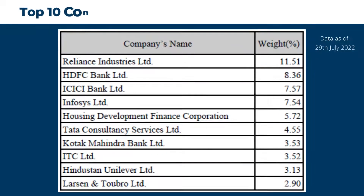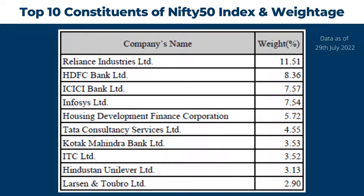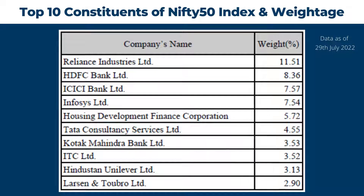On the screen, you can see the top 10 constituents of Nifty 50 and their weight in the index. Please note that this data is as of 29 July 2022 and is sourced from the Nifty 50 monthly fact sheet. As you can see, Reliance has the highest weightage of 11.51%, followed by HDFC Bank and ICICI Bank having weights of 8.36% and 7.57% respectively. Note that these weights are computed using the free float adjusted market capitalization method.